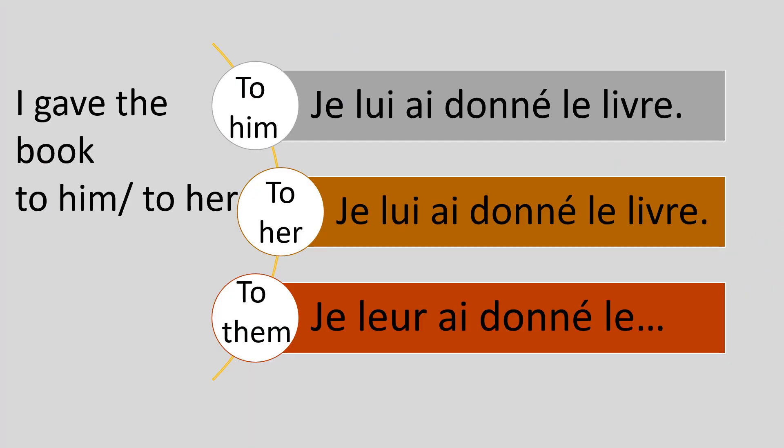In this example — I gave the book to him or to her — it's the same pronoun we're going to use: Je lui ai donné le livre. This works for both to him and to her. And because it's in the past tense with avoir, we put the pronoun just before avoir. If we want to say I gave the book to them, then we say: je leur ai donné le livre.